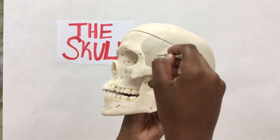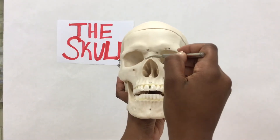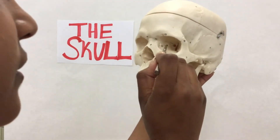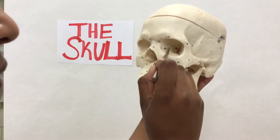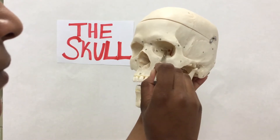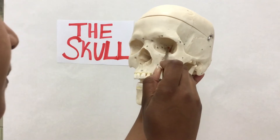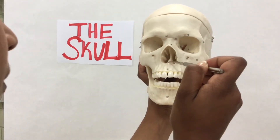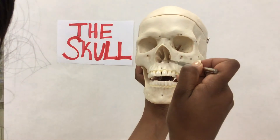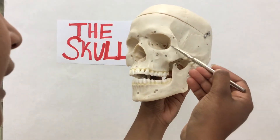This is the sphenoid bone. This is the nasal bone. This is the lacrimal bone. And then this is the ethmoid bone. This is the vomer bone. And this is the zygomatic bone.